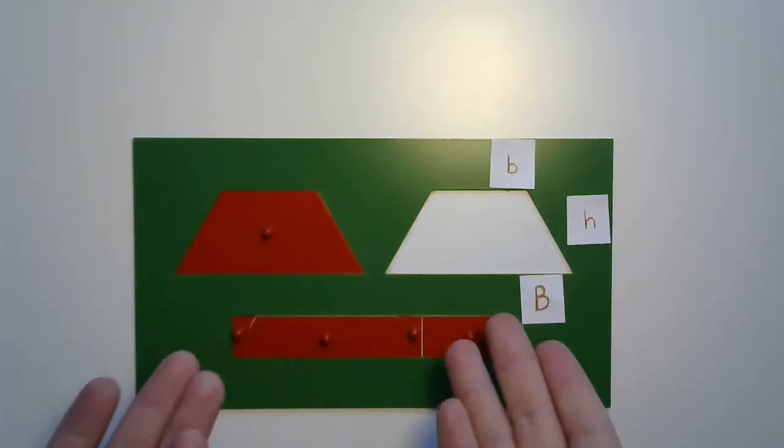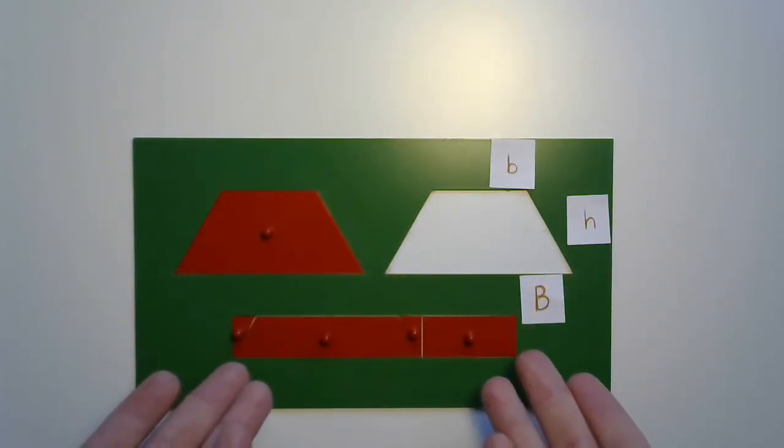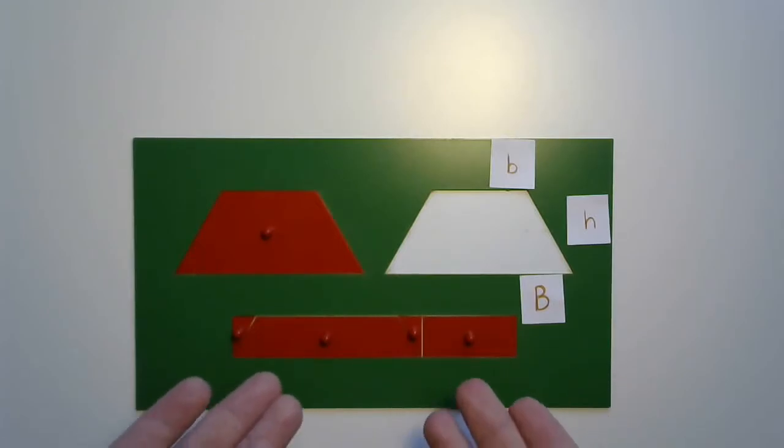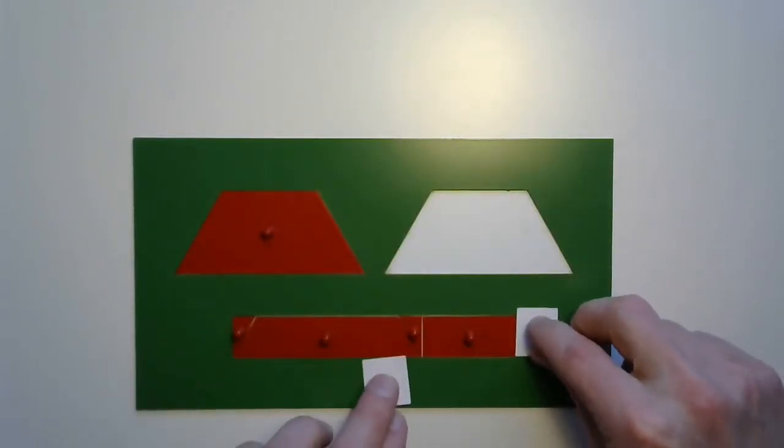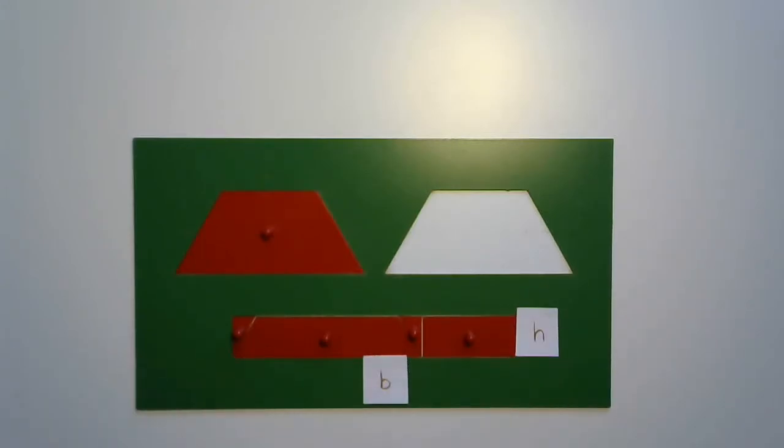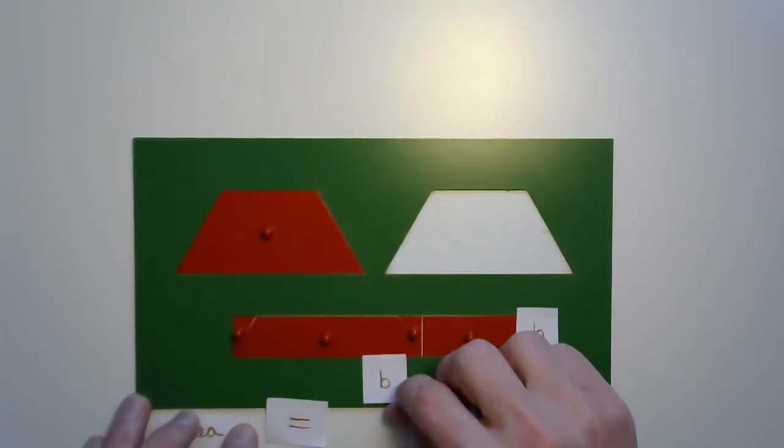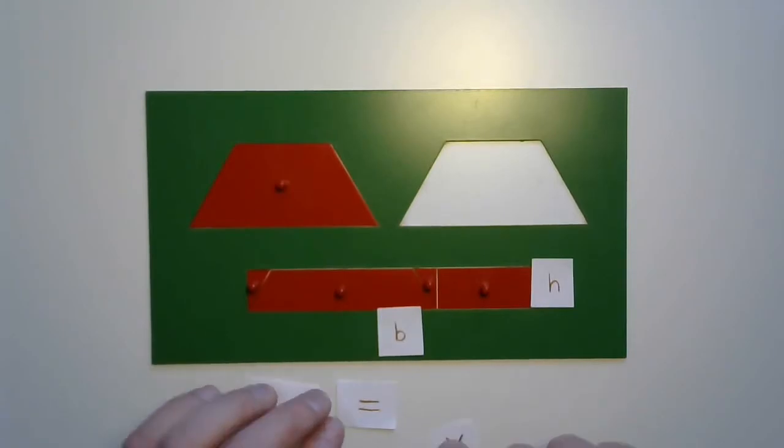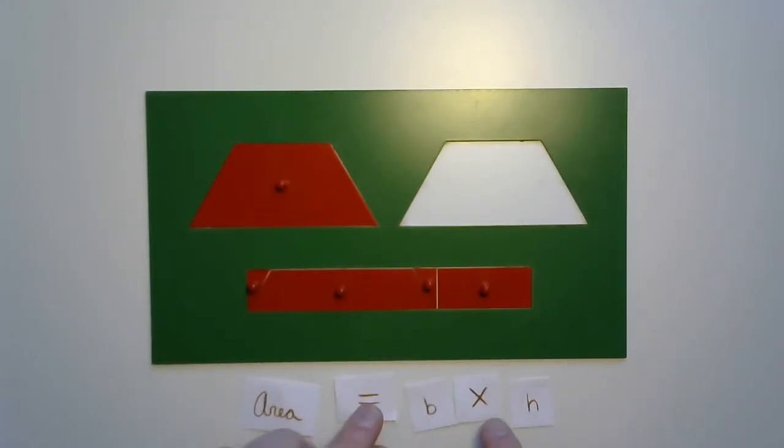Ta-da! Ta-da! It fits! And then finding the area of this would be pretty easy, right? Now we can just do that whole base times height, multiply them, and yeah, we should get the area pretty easily of that trapezoid.